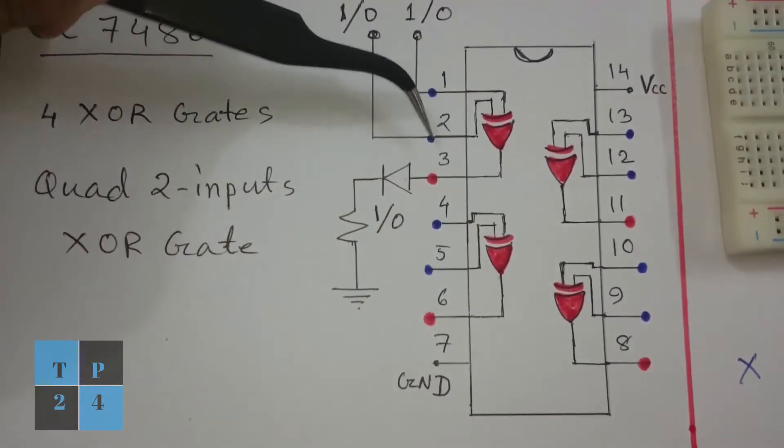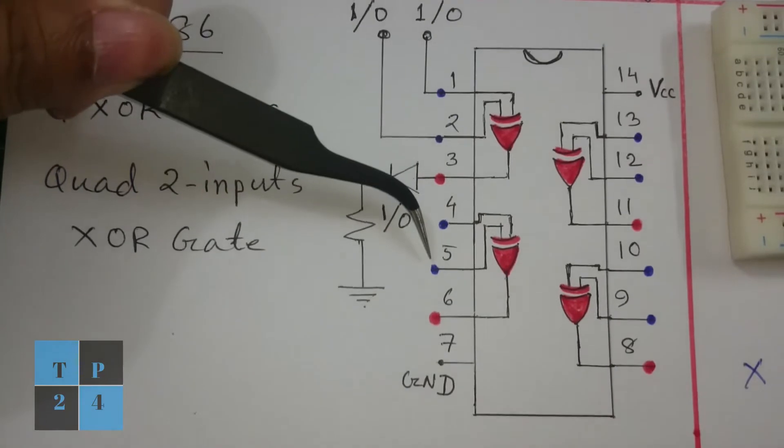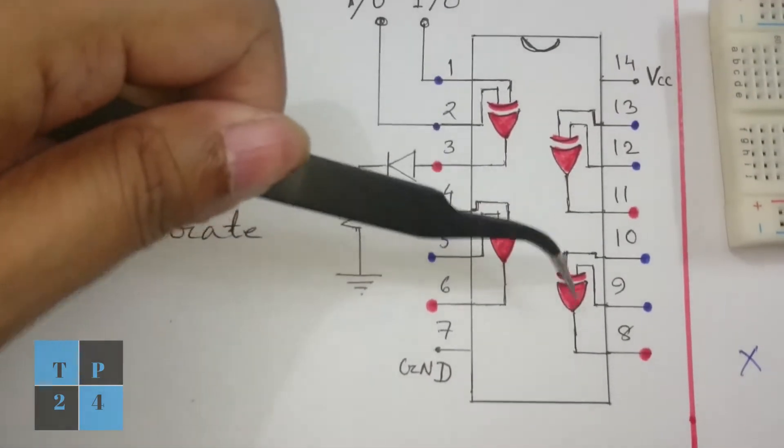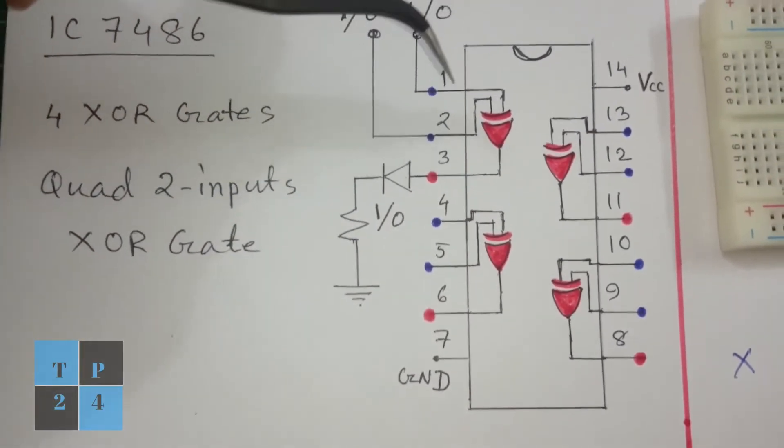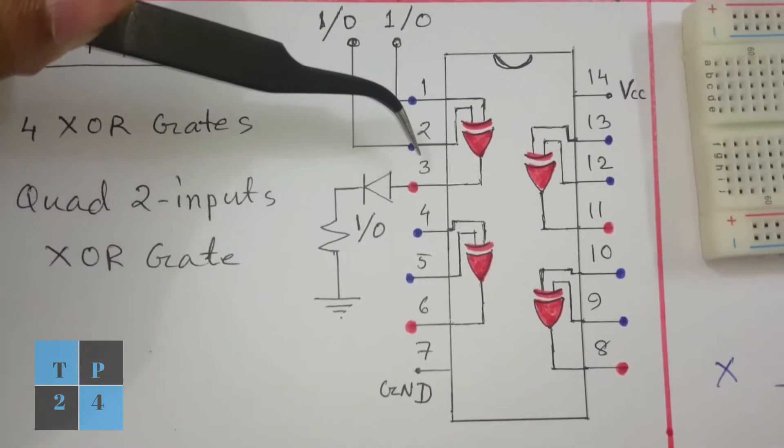And pin number 1, 2 is input and 3 is output. 4, 5 is input, 6 is output and the same way this pin configuration. And for my experiment I am only using one XOR gate of this IC.